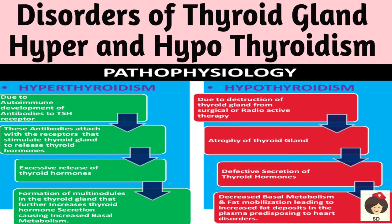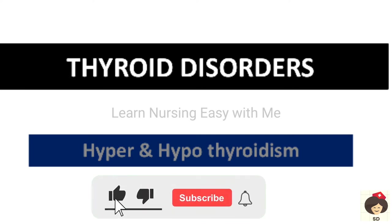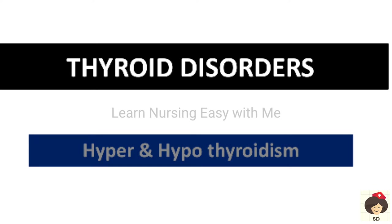Hello everyone, welcome to my class today. We will see the continuation of endocrine system disorder, that is thyroid disorders. In thyroid disorder, there is hyper and hypothyroidism. Hyper is increased secretion of thyroid hormone and hypo is decreased secretion of thyroid hormone.